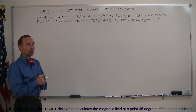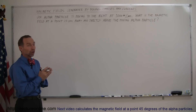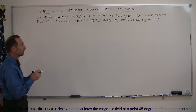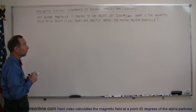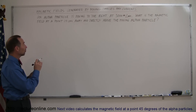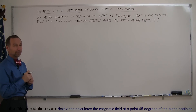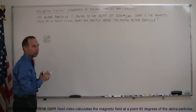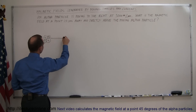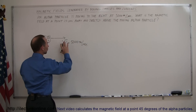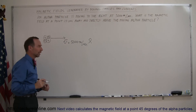We're going to start by looking at a moving charge and figuring out the magnetic field nearby. In our example we have an alpha particle — the nucleus of a helium atom, containing two protons — moving to the right at 5,000 meters per second. We need to find the magnetic field at a point two centimeters away and directly above the moving alpha particle. The velocity vector is 5,000 m/s in the x-direction.